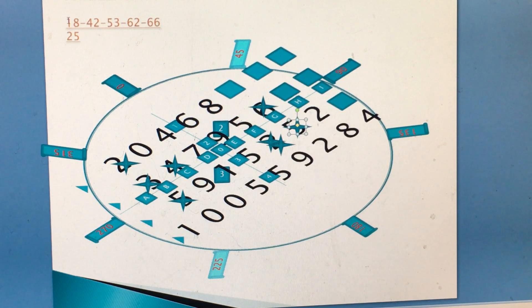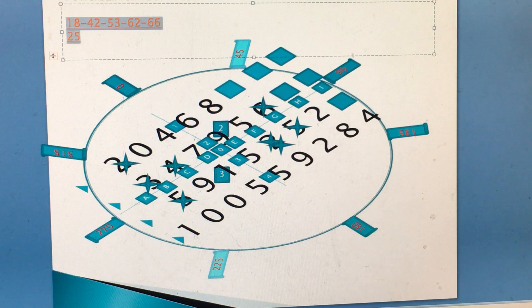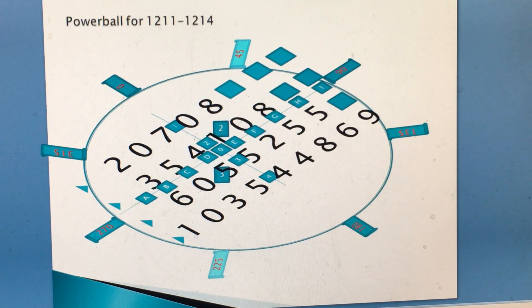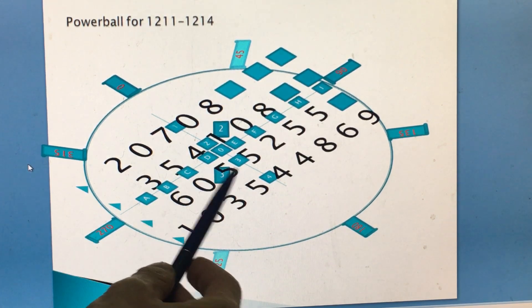Now, for tomorrow's draw, I'll be using this new IDC system. 2078, 20708, 354108, 6055255, 103544869. And the most common number, as you can see, probably 55 might be obvious. One time, two time, three time, four time.